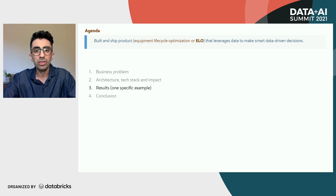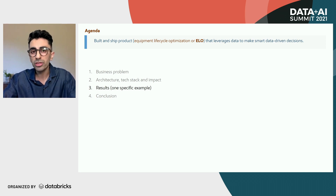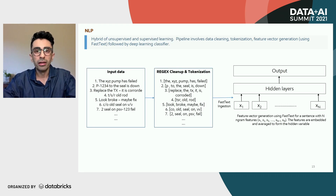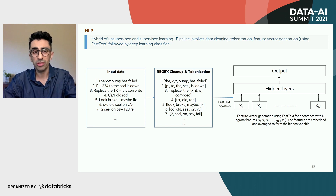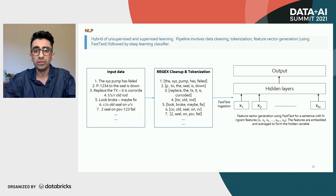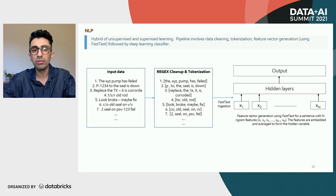Next, let's switch gears and talk about the data science — how our NLP workflow looks to help us answer the questions: what, when, and why. Here's an example of our workflow at a 50,000-foot view. We ingest raw data from Snowflake, our cloud data warehouse. Then we do cleanup using regular expressions, tokenization, and feed those tokens into a FastText model. Once we have the embeddings from the FastText model, we feed those into a classifier, which helps us understand and answer the questions: what, when, and why.